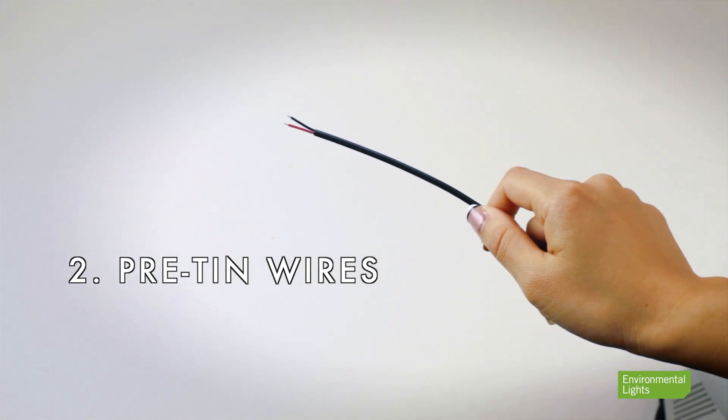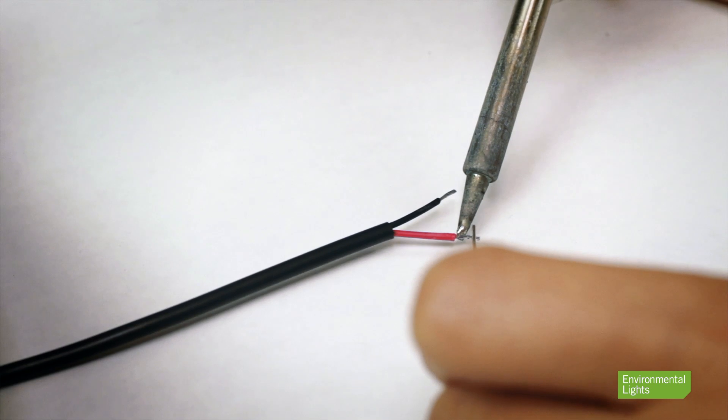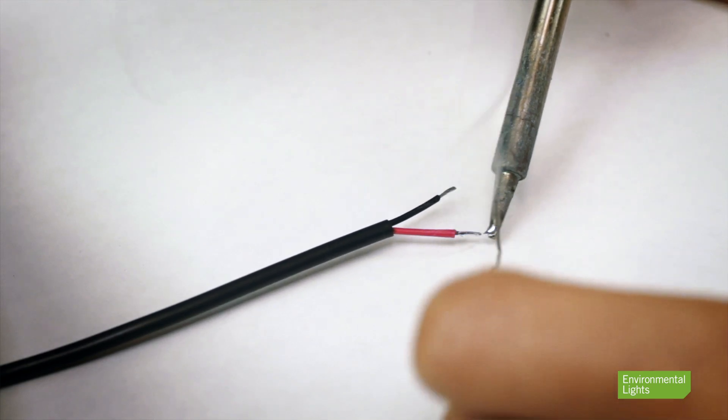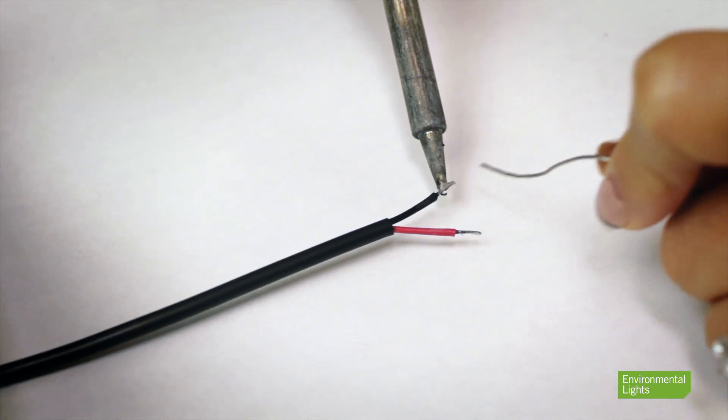Next, it is usually a good idea to pre-tin the wires. You will do this by using the soldering iron to add a bit of solder to the end of each of the wires. This will make it easier to attach the wire to the LED strip.